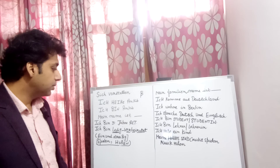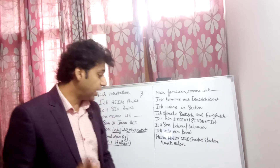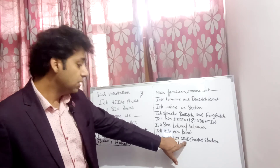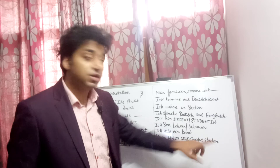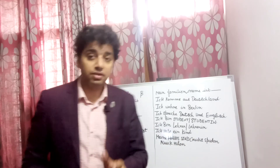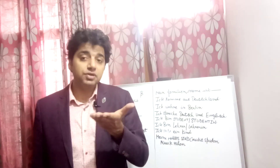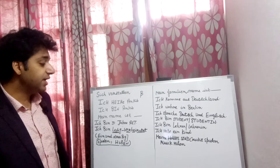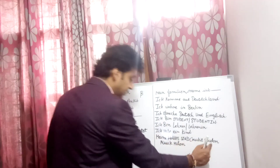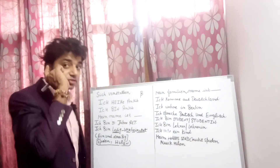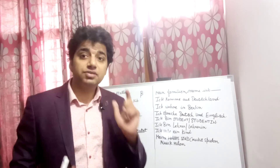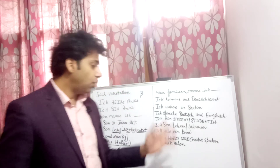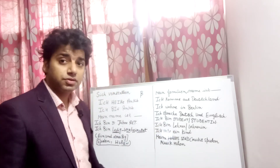If I say 'My hobbies are playing cricket and listening to music,' the phrase is 'Mein Hobby sind Cricket spielen, Musik hören.' 'Spielen' is the verb 'to play,' and 'hören' is the verb 'to listen.' So: 'Mein Hobby sind Cricket spielen, Musik hören.'